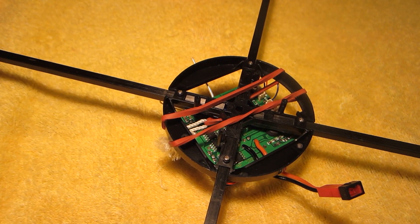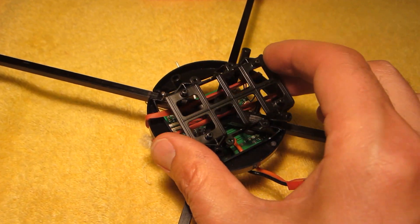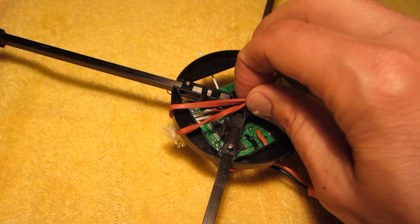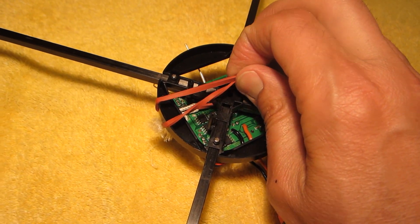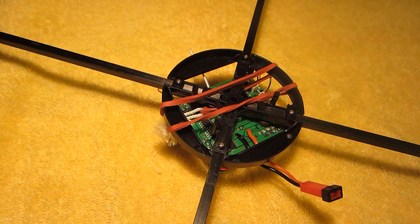These are modifications to the V262 quadcopter. One easy modification is to remove the small battery cage and replace it either with silicone bands, which are better than rubber bands because they don't dry out, or with velcro to hold larger batteries.